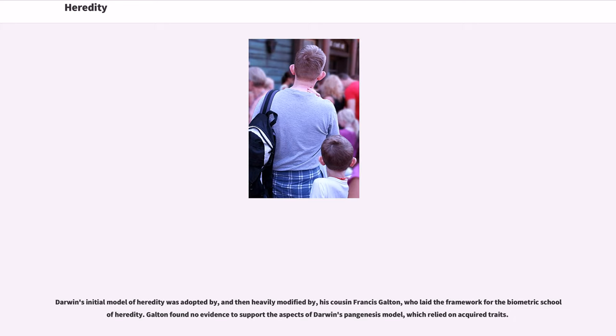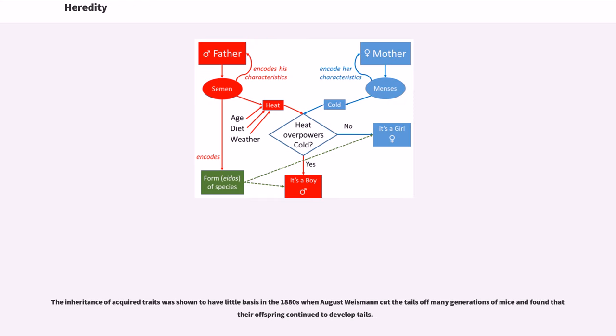Darwin's initial model of heredity was adopted by, and then heavily modified by, his cousin Francis Galton, who laid the framework for the biometric school of heredity. Galton found no evidence to support the aspects of Darwin's pangenesis model which relied on acquired traits. The inheritance of acquired traits was shown to have little basis in the 1880s when August Weismann cut the tails off many generations of mice and found that their offspring continued to develop tails.